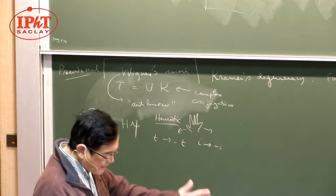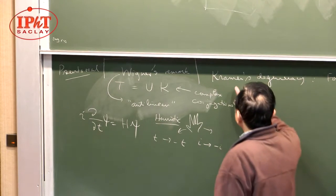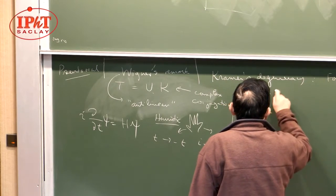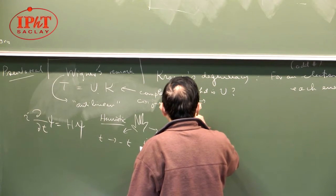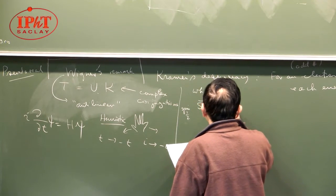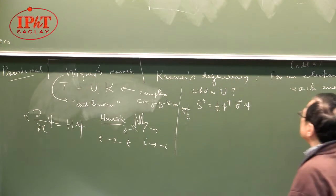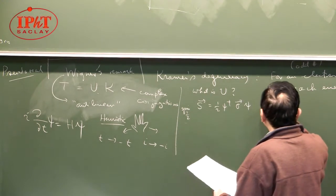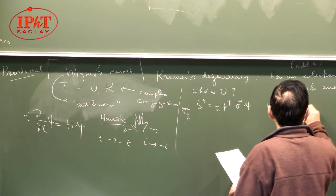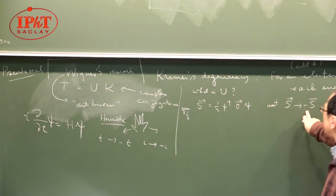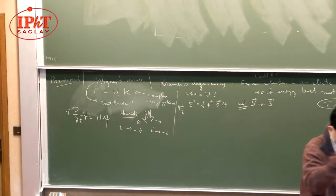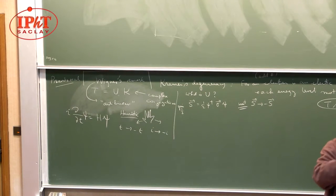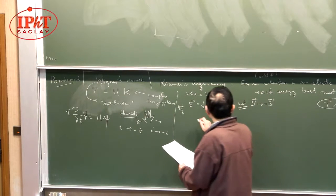The next question is: what is U? This is something you have to work out case by case. For spin one-half, it's represented in terms of Pauli matrices. We want S to go into minus S under time reversal — spin is spinning like this, and if you reverse time, it spins the other way. So under time reversal, this is one-half psi-dagger K U-dagger sigma U K psi.